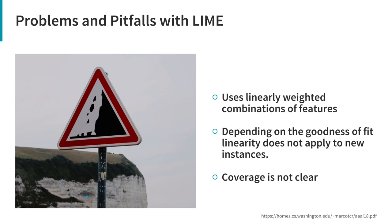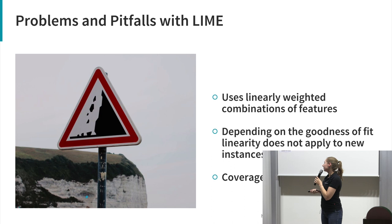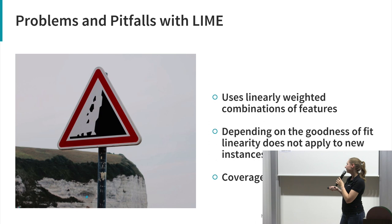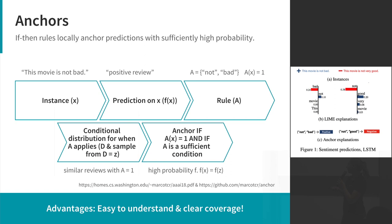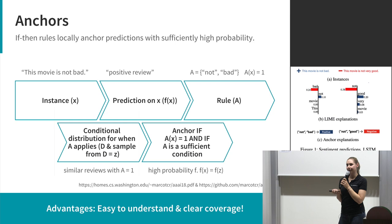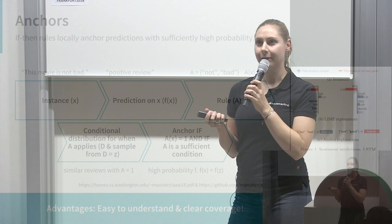Of course, there are also problems with LIME — it's not perfect. The model fit is often not very good; the explainer fit is not close to one usually. The linear weighted combinations of features means results depend on the goodness of fit for this linearity, and it doesn't always apply. Coverage is not really clear either. There's a new paper from this year called Anchors, which proposes something different: if-then rules learned from the model. It also works with perturbations, finds rules with conditional distributions, and you can find 'anchors' — rules that apply with a certain probability as the explanation behind a prediction.